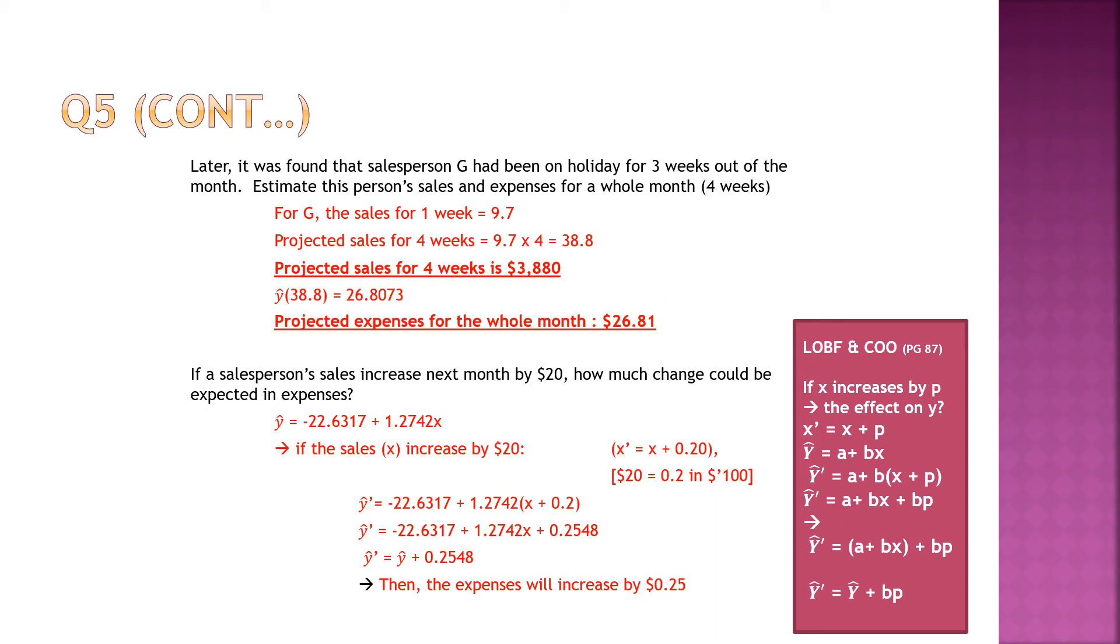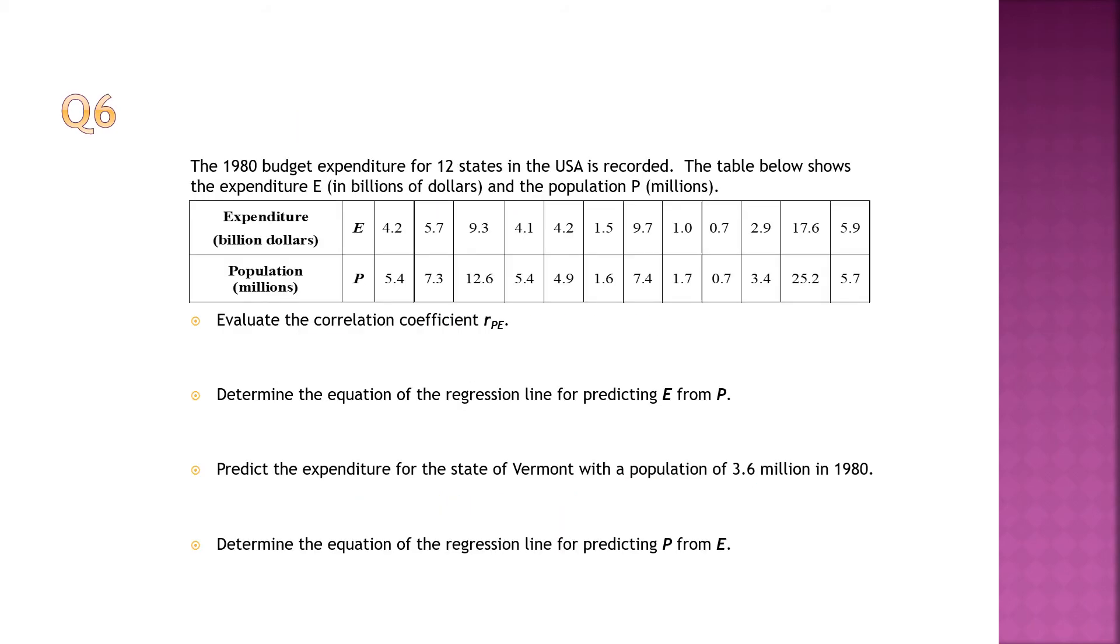X plus 0.2. Then you will open the bracket. There shouldn't be a problem, right? You open a bracket, you get 1.2742X plus 0.2548. So what you can see is the first part of the equation is the original equation plus 0.2548. That means the expenses will increase by 0.25 cents. Just look on the table there at the side here that you can see. I've shown you how to work it out. You just put it into the bracket, open the whole bracket and then you will see the original equation plus with whatever that you're going to increase there. Understand or not?